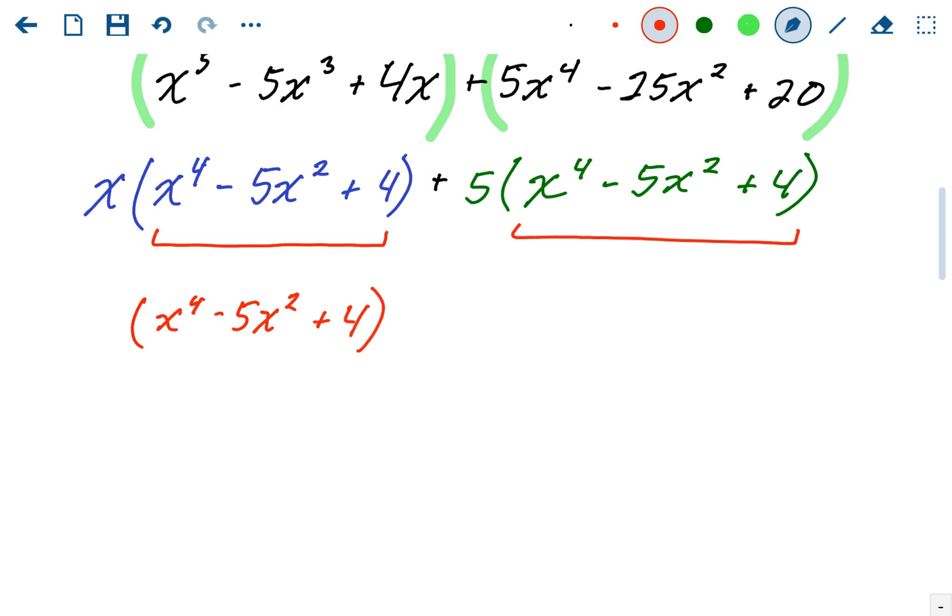And what's left over is, well, you have an x from the first group and you have the 5 from the second. So x plus 5. So that x plus 5, that's a linear binomial. That's unfactorable. That's just going to hang out for the rest of the problem.